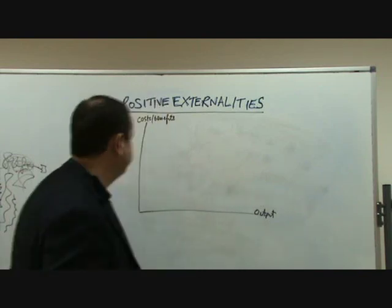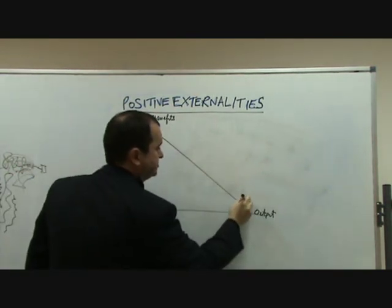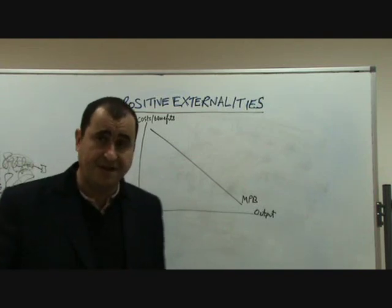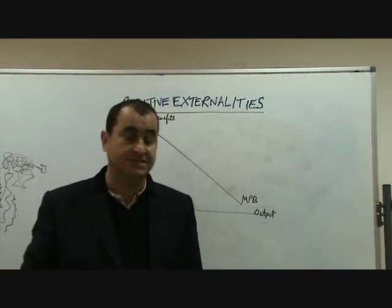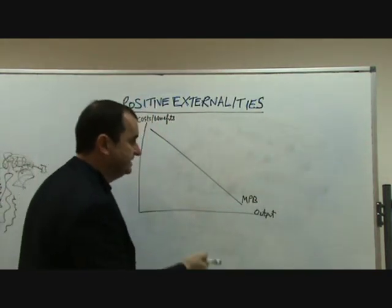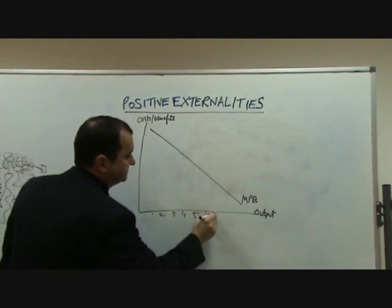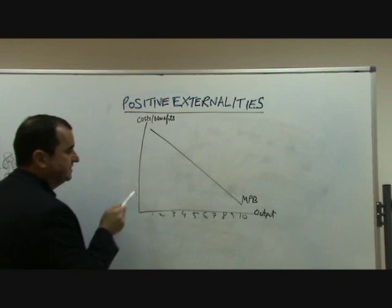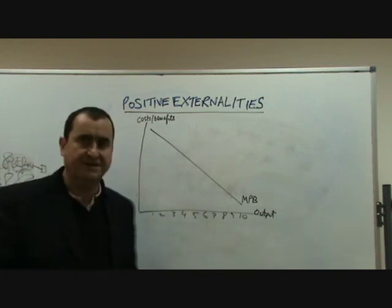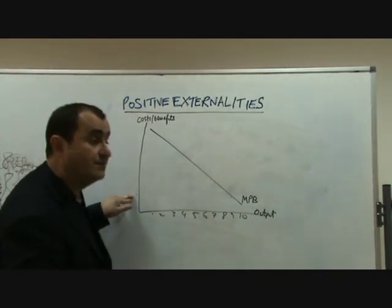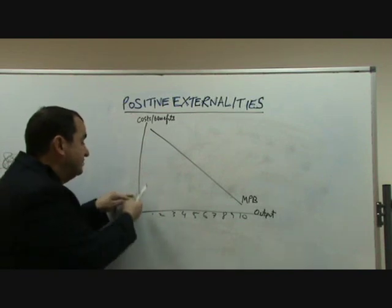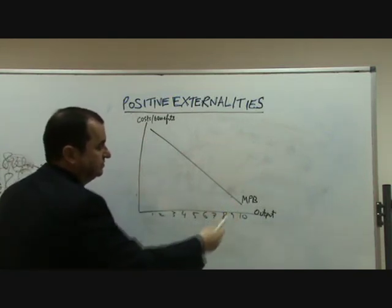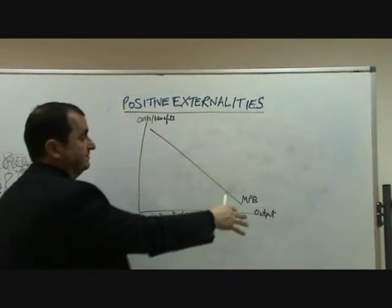Let's explore this on a graph. We have a downward sloping marginal private benefit curve. Marginal private benefit — private benefits are the benefits enjoyed by the buyers and sellers in an economic activity, and marginal refers to how much extra benefit is enjoyed. The ninth unit, for example, only generates this much extra benefit — not a measurement of total benefit from nine units, but the extra benefit from having the ninth unit after already having eight. As another unit is continually consumed, it generates less extra benefit than the one before. That's why marginal private benefit is falling.